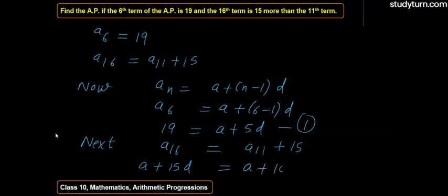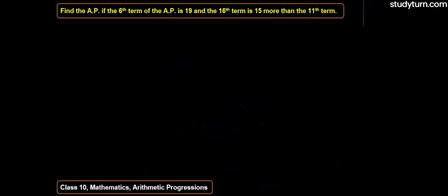A plus 10D plus 15. So A from A cancel. 15D minus 10D is equal to 15. 15D minus 10D, so we can write 5D is equal to 15. 5D is equal to 15, means D is equal to 3. D is equal to 3.